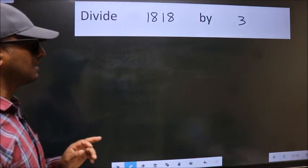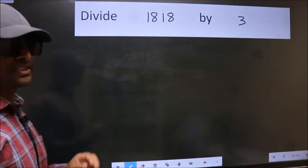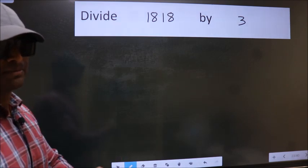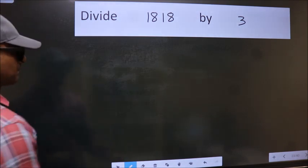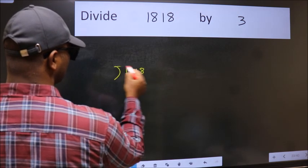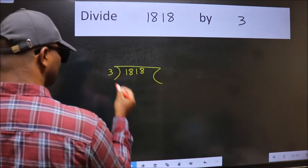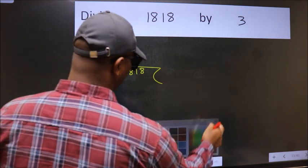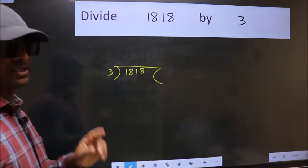Divide 1818 by 3. To do this division, we should frame it in this way. 1818 here, 3 here. This is your step 1.